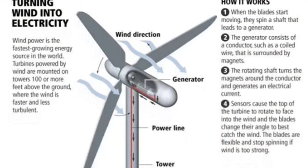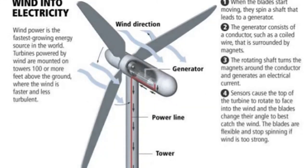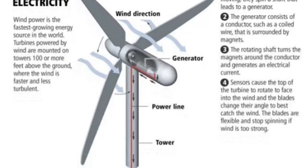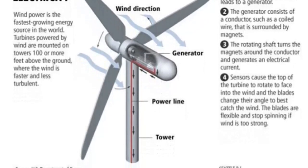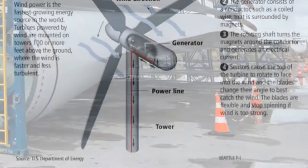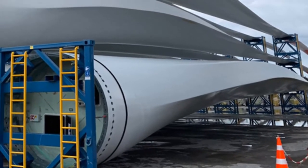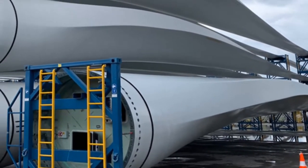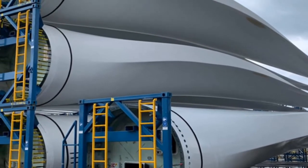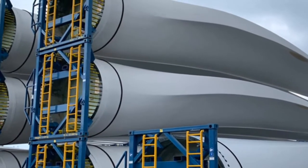Wind turbines have relatively short lifespans and require massive amounts of raw materials compared to coal, gas, hydroelectric, or nuclear plants. Manufacture of turbine housings and blades involves enormous air and water pollution in faraway countries where much of the mining, processing, and manufacturing are done before turbine parts are shipped to America.